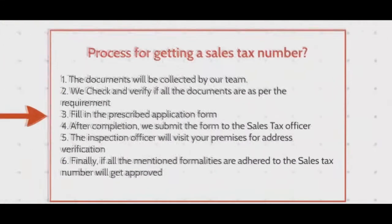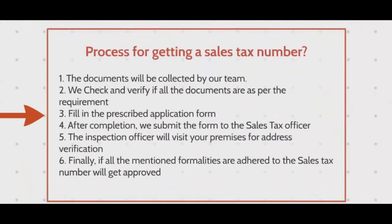Process for getting a sales tax number: The documents will be collected by our team. We check and verify if all documents are as per the requirement, and we fill in a prescribed application form. After completion, we submit the form to the sales tax officer. The inspection officer will visit your premises for address verification. Finally, if all the mentioned formalities are adhered to, the sales tax number will get approved.